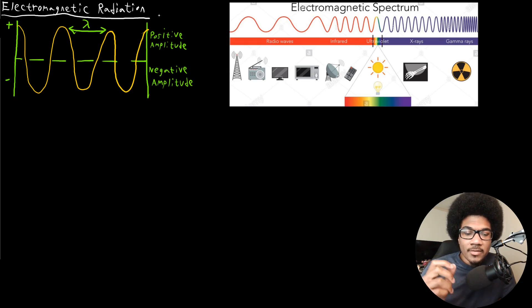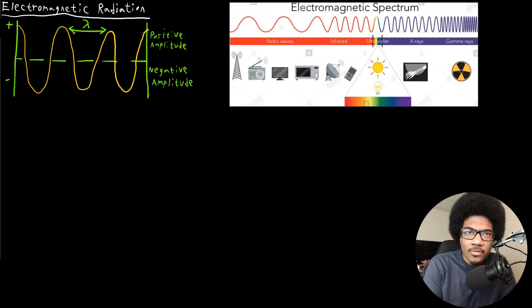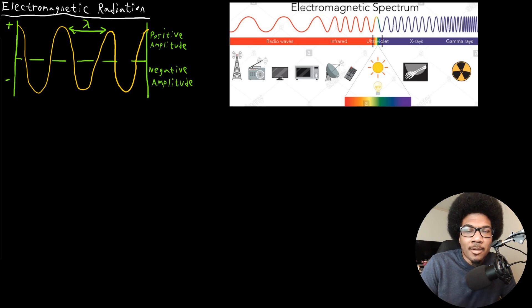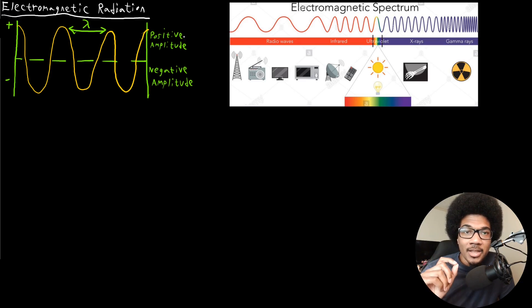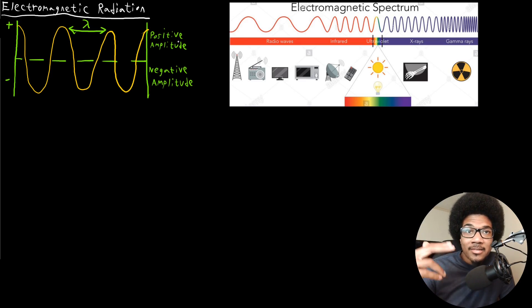So what is electromagnetic radiation? Electromagnetic radiation is the energy that results from oscillating electric and magnetic fields — that's where 'electromagnetic' comes from. Oscillating electric and magnetic fields that produce energy is the electromagnetic radiation. And how it's modeled in classical mechanics is by using waves, since it has this oscillation to its energy, its physics is modeled using a wave.